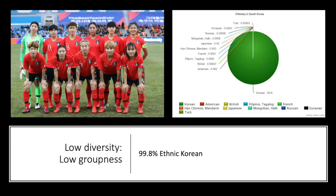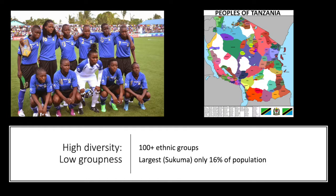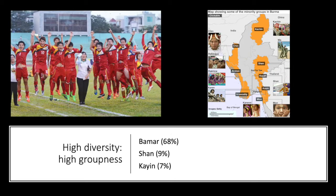Ethnically homogeneous countries, like the Republic of Korea, and extremely ethnically diverse countries, like Tanzania, are characterized by low groupness—ethnic or religious identities are not particularly salient for mobilizing people politically or economically. In contrast, in countries like Iraq, with Sunni Arabs, Shia Arabs, and Kurds; Burundi and Rwanda, with Tutsis and Hutus; and Myanmar, with the Bamar, Shan, Kayin, Rakhine, Mon, Kachin, Rohingya, and other ethnic groups—an incredibly multi-ethnic society—political cleavages and patronage networks break down along identity-based lines, making groupness high.